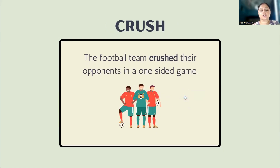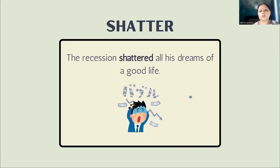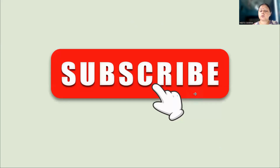'Crush' — the football team crushed their opponents in a one-sided game, bilkul unhoney defeat kar diya, khatm hi kar diya apni opponent team ko. 'Shatter' — the recession shattered all his dreams of a good life. Recession ki wajah se uske saare good life ke jo dreams the, woh sab khatam ho gaye, destroyed ho gaye, shattered ho gaye. So subscribe to my channel to learn such new words.